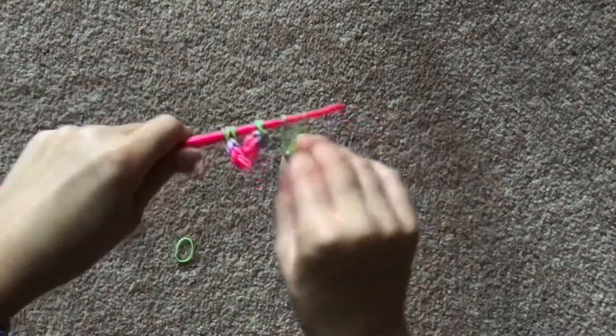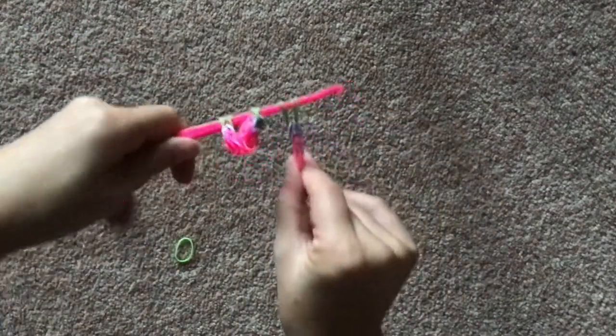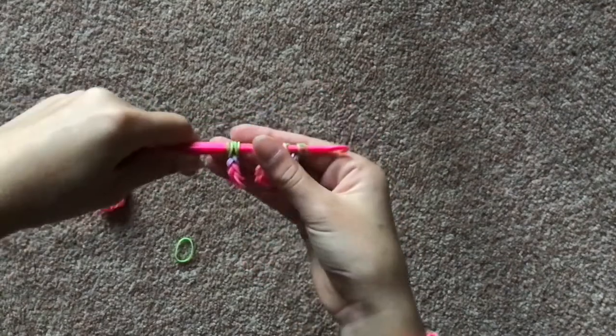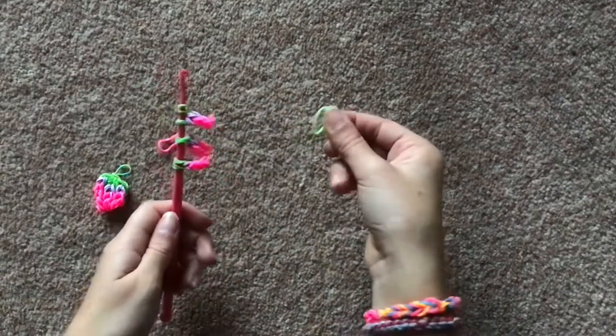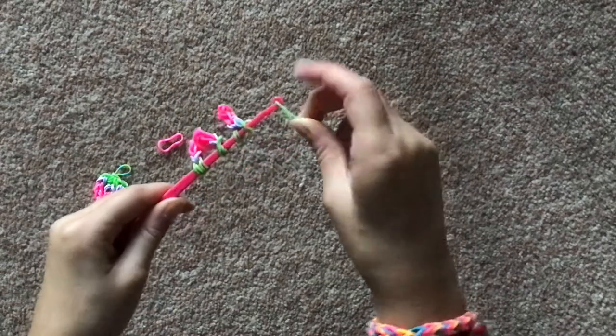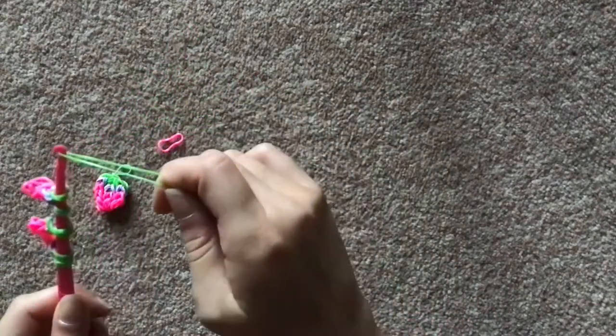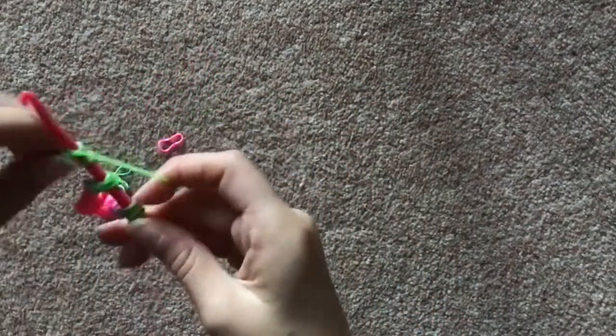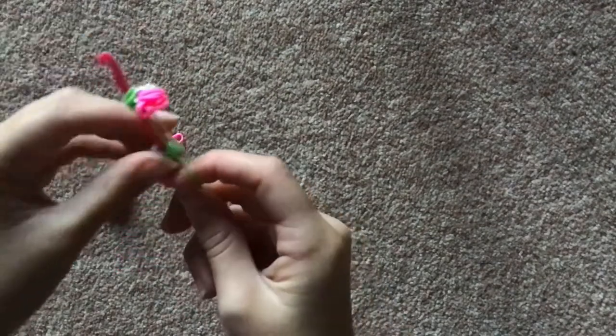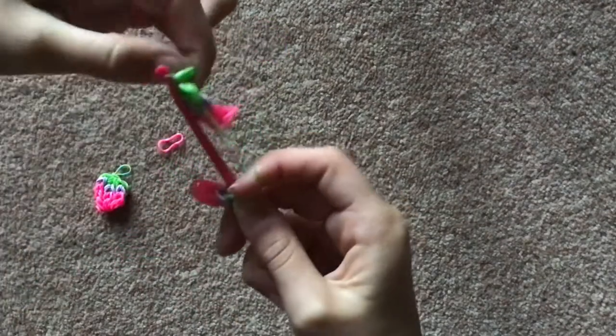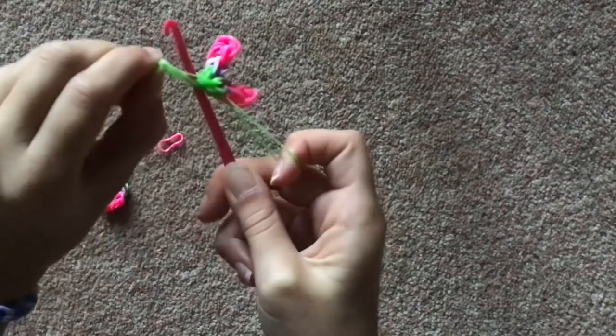And finally we're going to make one more of these. Now we can put this one on here as well so now we have all three on here. Now you're going to take your one green band and put it at the top of your hook and then you're going to slide all three things onto it, just slide them over the hook.